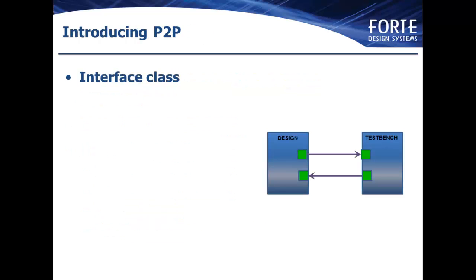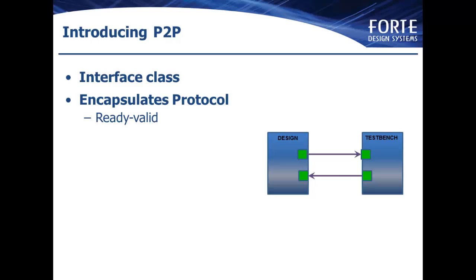First, let's take a quick look at the P2P classes themselves. These classes are what we call interface classes, and they're written in SystemC. The point-to-point interface is part of the SYNWARE interface library that includes a number of different kinds of interfaces, including things like FIFOs and stream buffers and line buffers. Point-to-point or P2P is certainly the most simple of those. Basically, what these classes do in general is that they encapsulate protocol. The point-to-point class specifically is really a ready-valid handshake. The goal of using the P2P classes is productivity, both from a design and verification point of view.